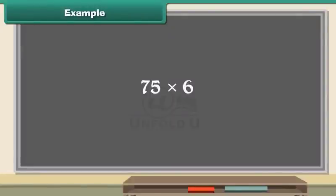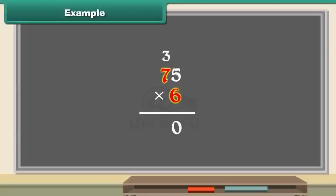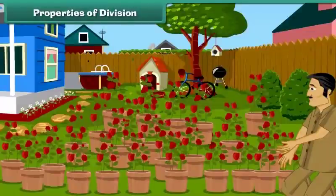Example: Multiply 75 by 6. Place the numbers one below another. Multiply 5 by 6 — 5 sixes are 30. Place 0 below 6 and carry 3 above 7. Multiply 7 by 6 — 7 sixes are 42. Add 42 and 3 and write 45 below 7. The answer is 450.